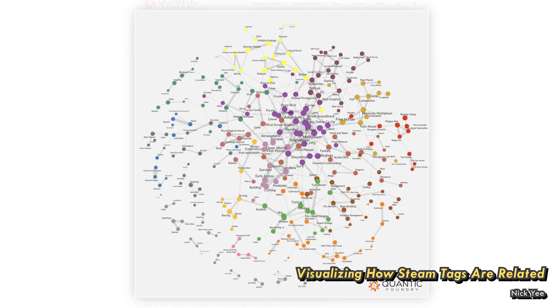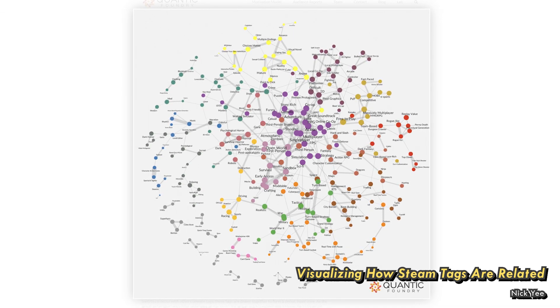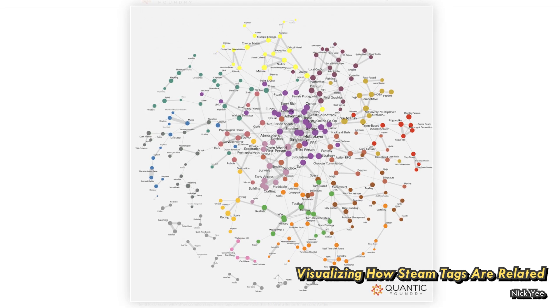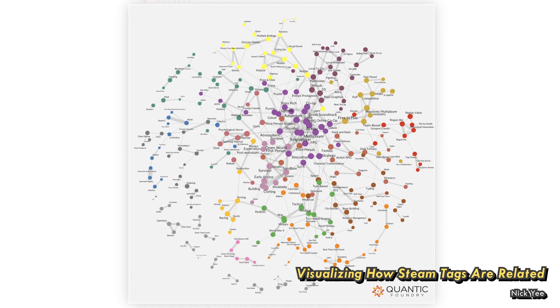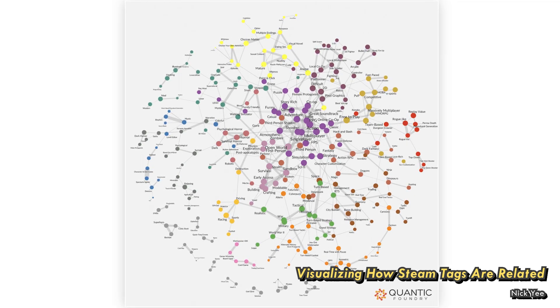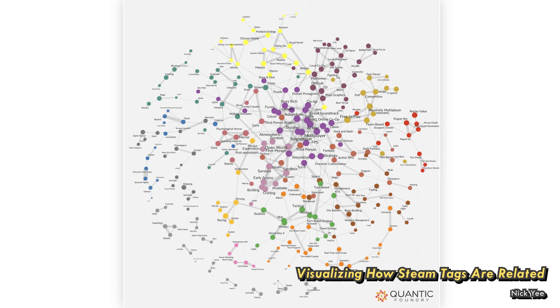If you step outside of Steam, there are some materials available on the internet, like a graph made by Quantic Foundry which visualizes how popular all the tags are and what their relations to each other are — basically which tags are often used together. This graph is from 2018 though, so there have probably been some changes, but it could still give some ideas. Maybe there is a newer similar graph available that I didn't notice with a quick Google search.